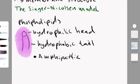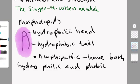Phospholipids are amphipathic, meaning that they both have hydrophilic and hydrophobic properties. Phospholipids are also what gives the membrane fluidity.